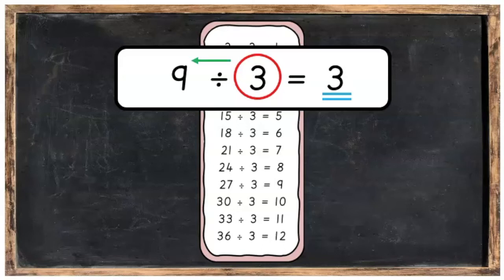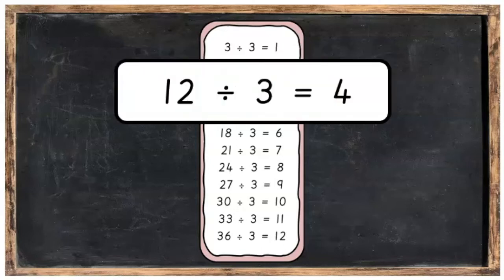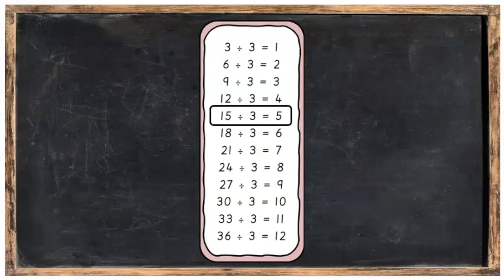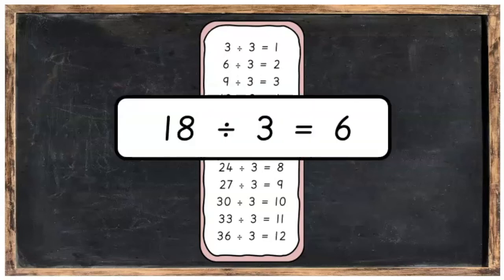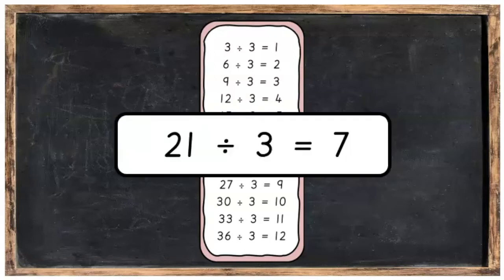Three into nine goes three times. Now repeat this one: three into twelve goes four times. Well done! Three into fifteen goes five times. Three into eighteen goes six times. Keep repeating after me.